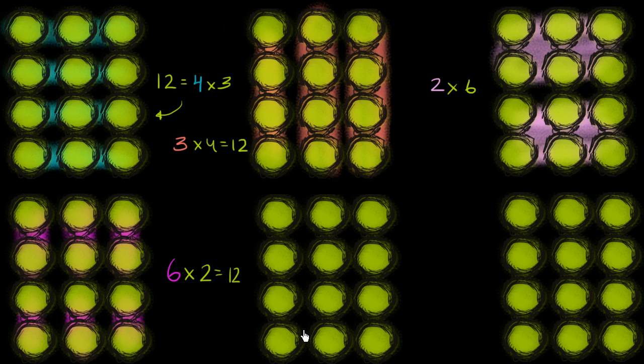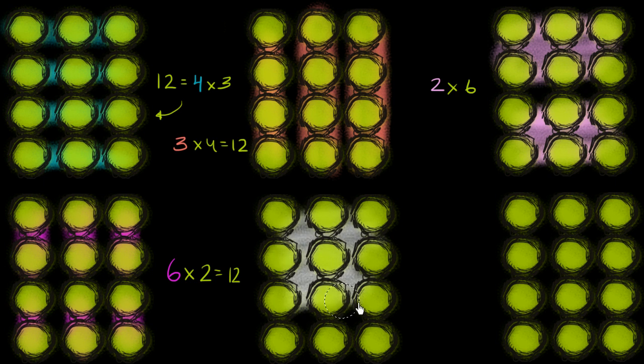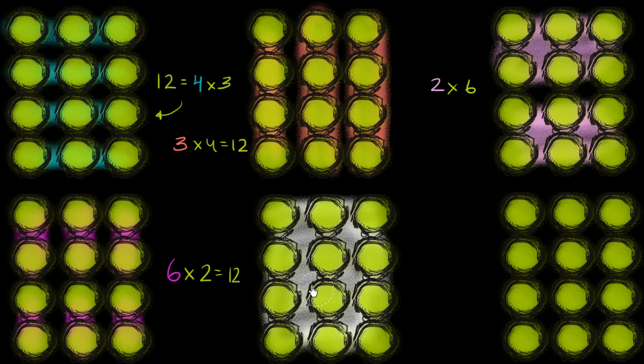But we don't have to stop there. We could also literally view 12 as 1 group of 12. So 1 group of 12. So this whole thing is just 1 group of 12 here. So we could literally say 1 times 12, 1 times 12 is equal to 12. We have 1 entire group of 12.